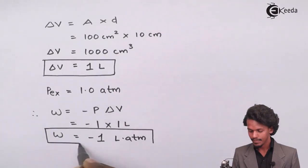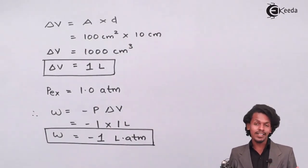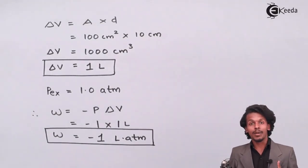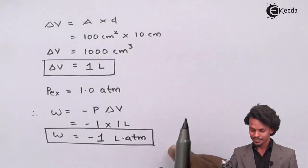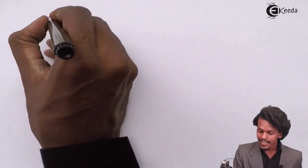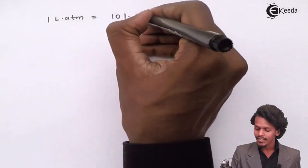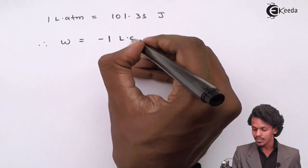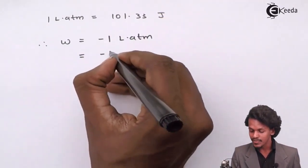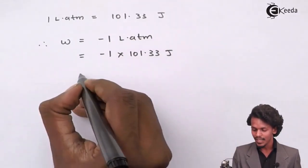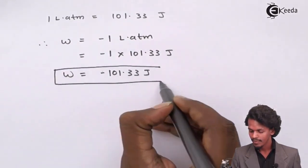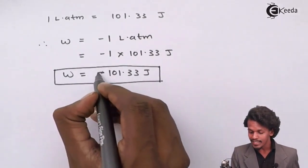This is not the final answer because the work done must be expressed in Joules. Using the conversion: 1 litre·atmosphere = 101.33 Joules, we convert: W = −1 litre·atm = −1 × 101.33 = −101.33 Joules. So the final answer is −101.33 J.